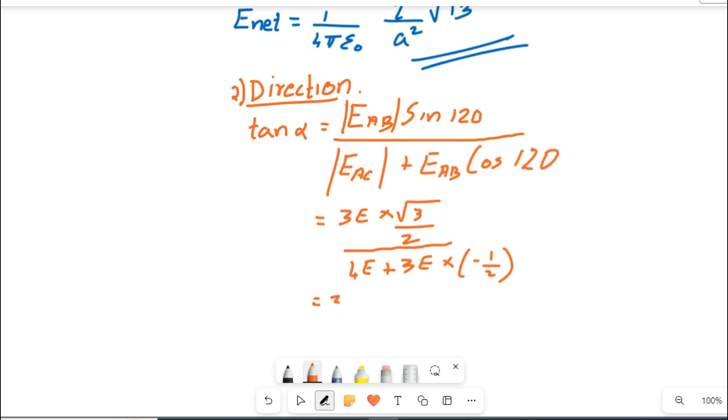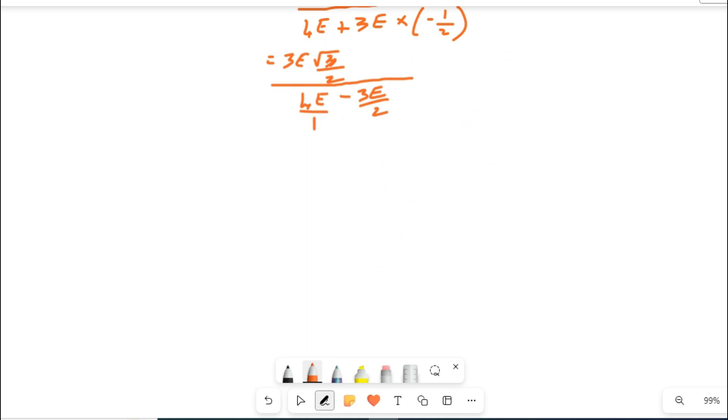Then simple mathematics apply here. I am just copying the numerator, not doing anything on the numerator part. Denominator, little bit work required: 4E plus 3E into minus 1 by 2 will be minus 3E by 2. Then denominator, do LCM work. So 4E by 1 minus 3E by 2.